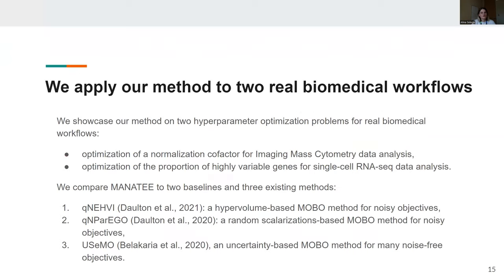In our work, we showcase our method on two hyperparameter optimization problems for real biomedical workflows. Specifically, we optimize the normalization cofactor for imaging mass cytometry data analysis. And we optimize the proportion of highly variable genes for single cell RNA sequencing data analysis.